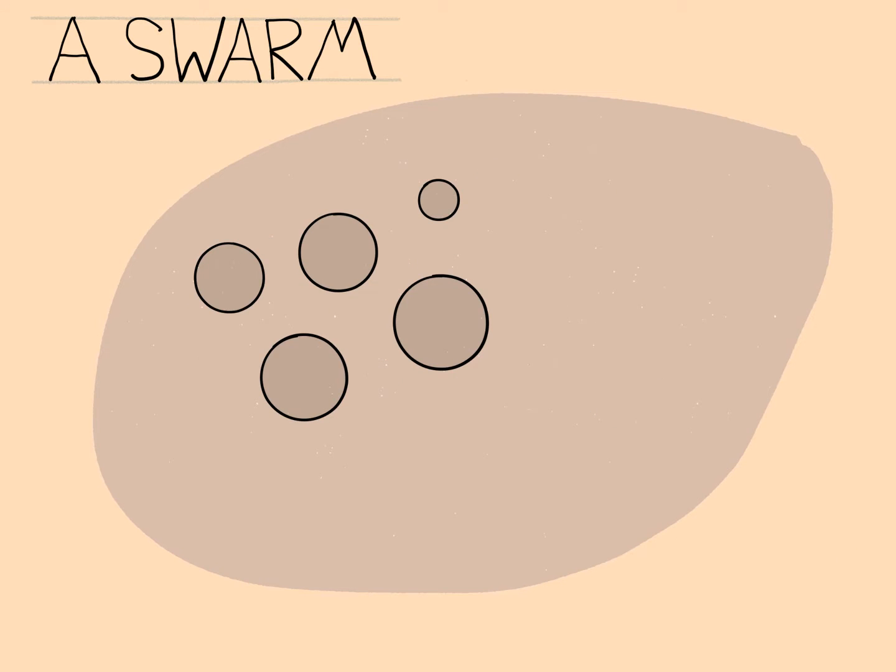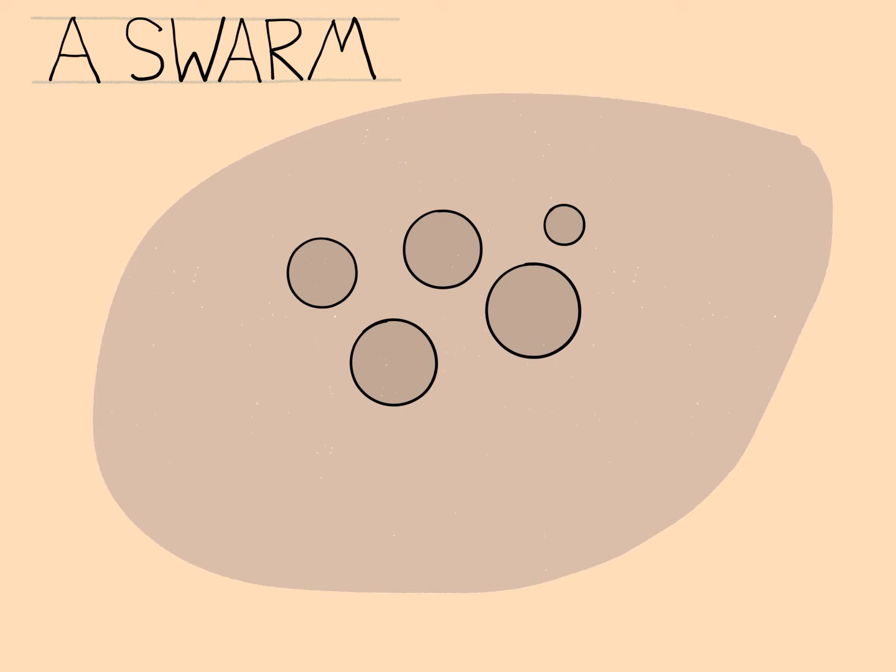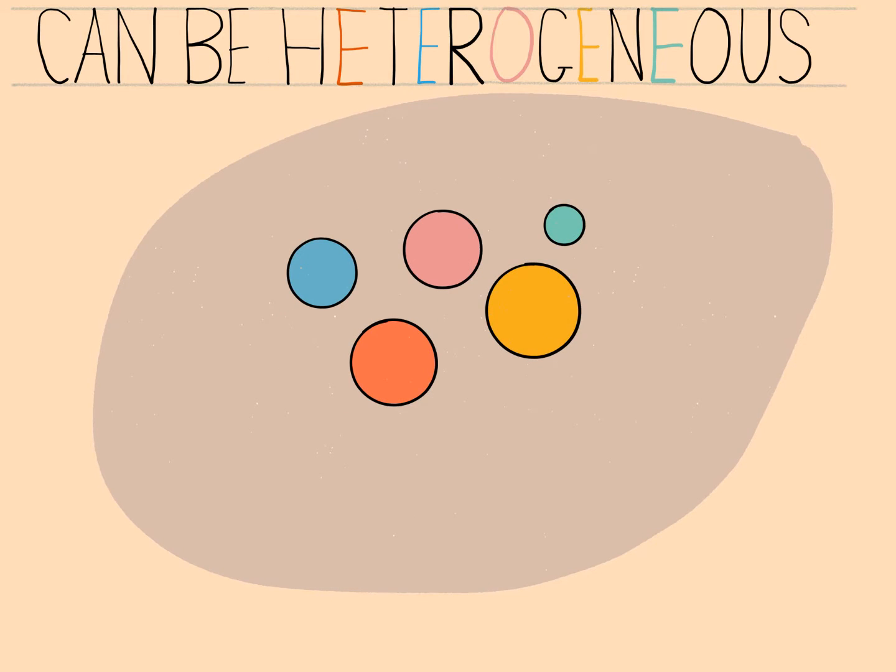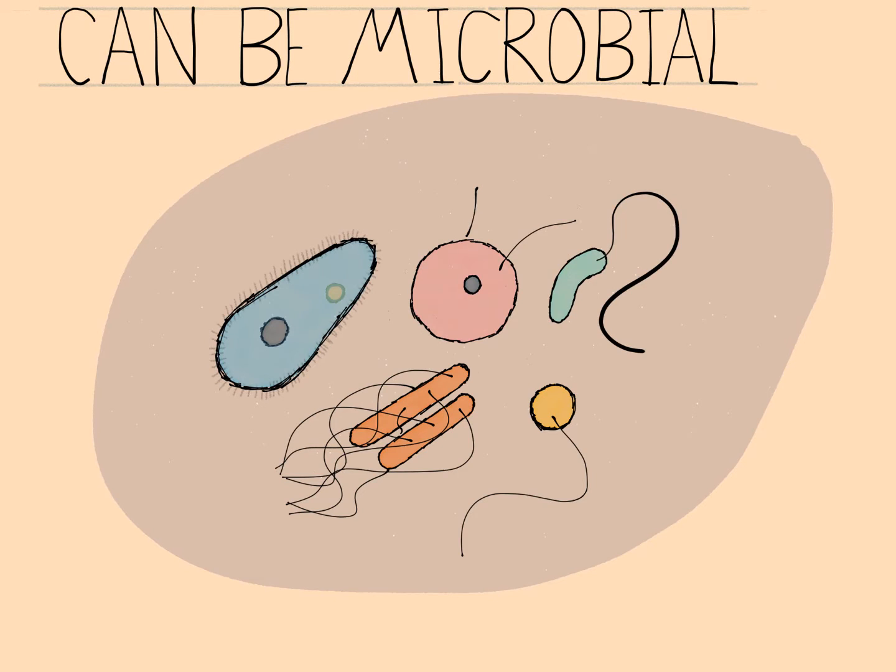We can consider the swarm as a group of moving objects. There's some sort of coordination between these objects. In fact, not all the objects have to be the same. A swarm can be heterogeneous. Importantly for this paper, a swarm can be microbial. It can be composed of one microorganism or different microorganisms.